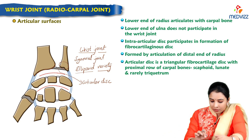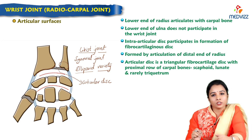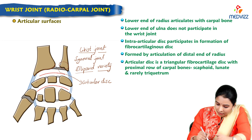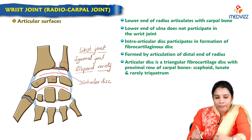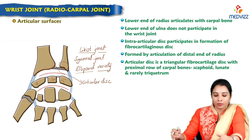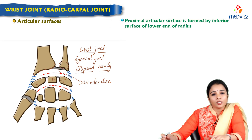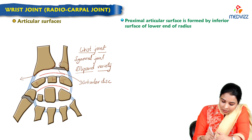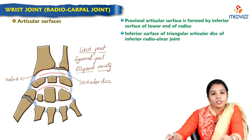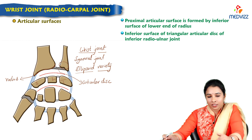Three carpal bones take part in the articulation: the scaphoid, lunate, and rarely the triquetrum. Part of the triquetral also takes part. The proximal articular surface is formed by the inferior surface of the lower end of the radius, and the inferior surface of the triangular articular disc also takes part in the joint.